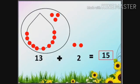Here, in the circle there are thirteen beads, and outside the circle there are two beads. Let us count them together: one, two, three, four, five, six, seven, eight, nine, ten, eleven, twelve, thirteen, fourteen, fifteen. There are fifteen beads. That means thirteen plus two is equal to fifteen.